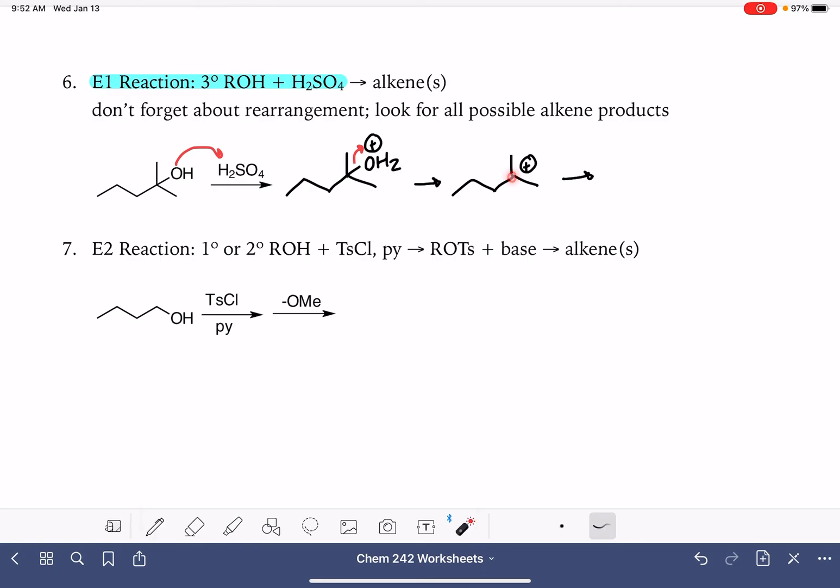Once we have identified our good carbocation, we're going to remember that elimination can take place in any direction coming from that positively charged carbon. So we have a lot of different products that we could make. In this particular reaction, not a ton. We also need to remember when we're looking for all possible alkene products, we have to remember to look for cis and trans products as well.